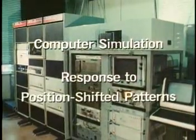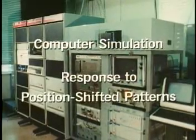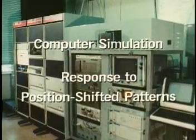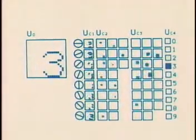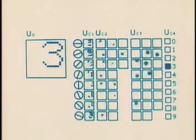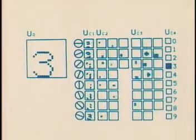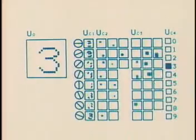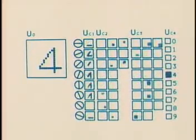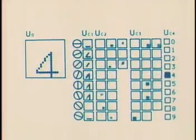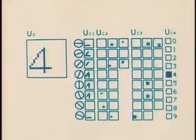Now the response of the cells of the network to various patterns will be shown. You will see first how a shift in the position of an input pattern affects the response of the neocognitron. If an input pattern is presented in a different position, the response of cells in intermediate layers, especially those near the input layer, varies with the shift. However, the deeper the layer is, the smaller is the variation in response. The cells of the deepest layer are not affected at all by a shift in position of the input pattern.